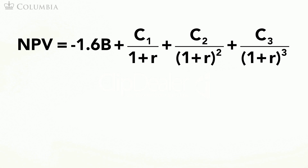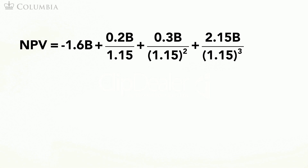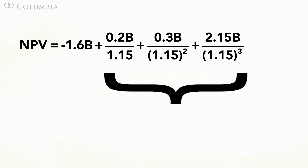The NPV is then given by this expression. Note that we already know part of it — the last three terms equaled $1.81 billion, as we computed before. The NPV is therefore minus $1.6 plus $1.81, or $0.21 billion.